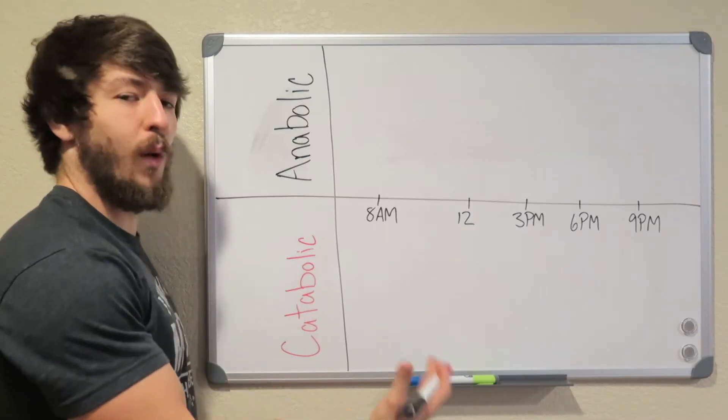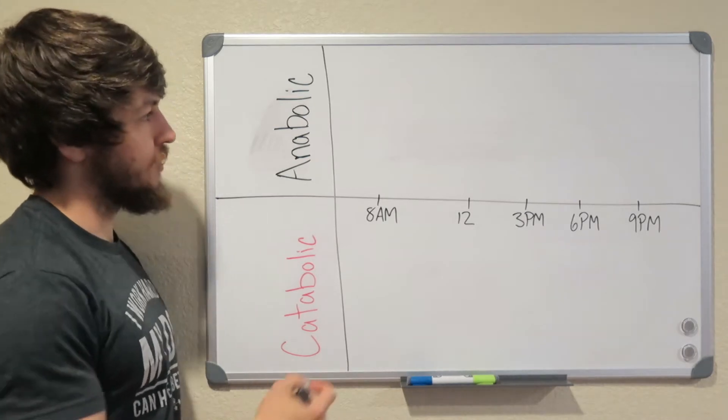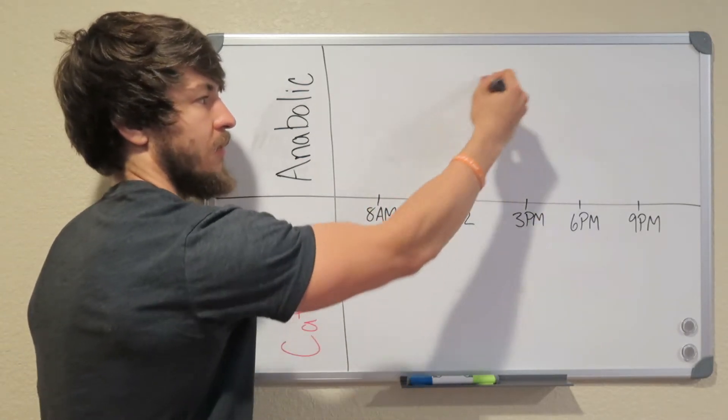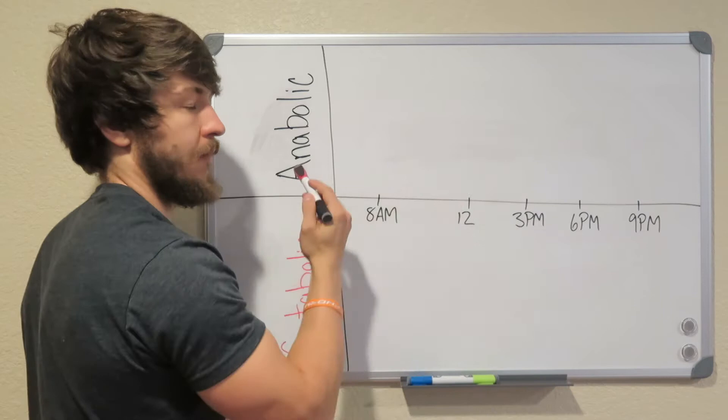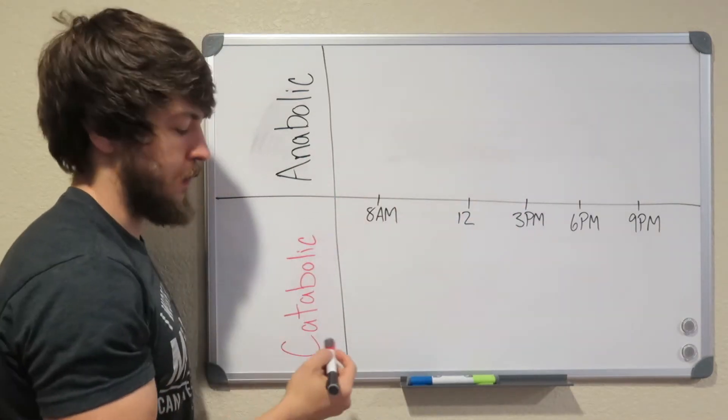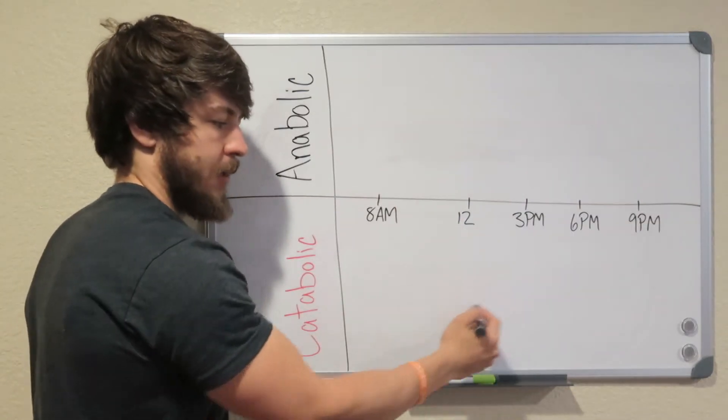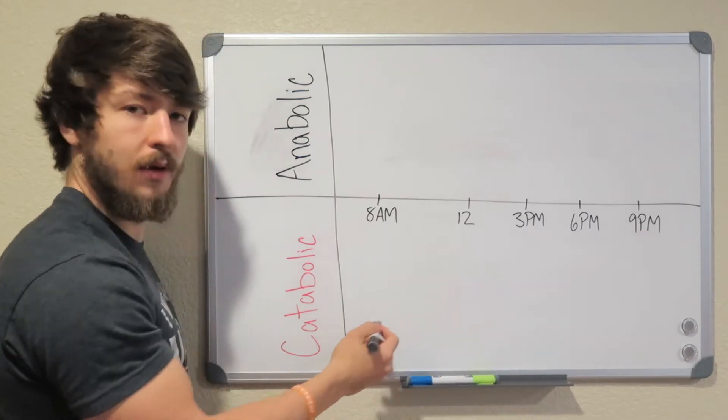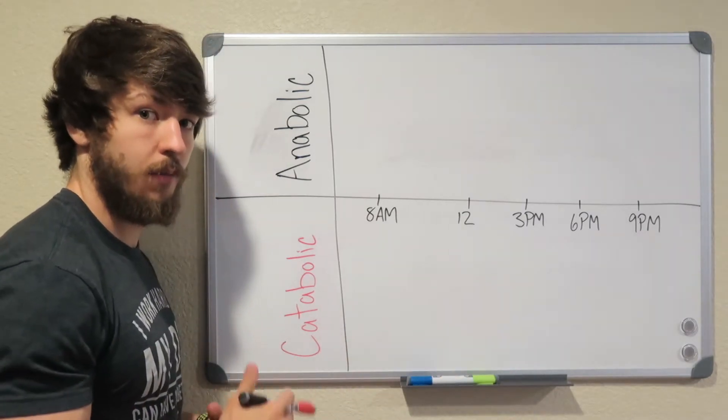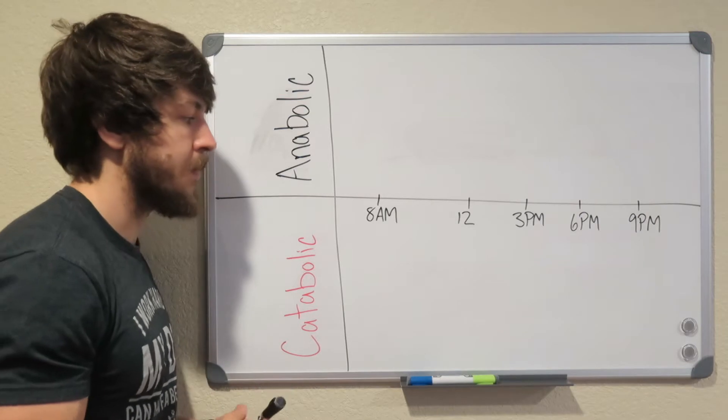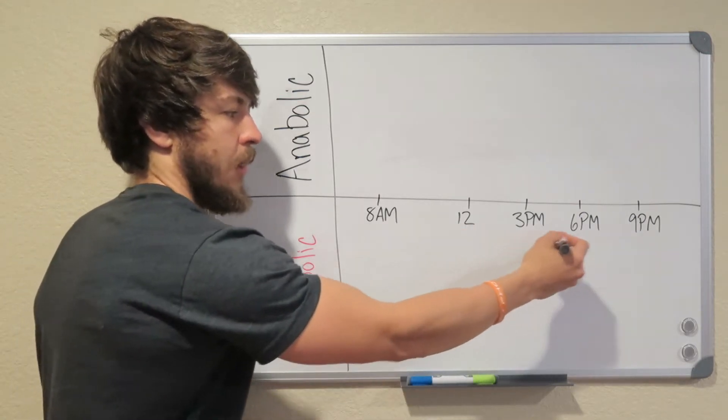So I drew you guys this wonderful chart. As you can see, we want to be up here in this top half, because this is our anabolic phase. That means we're going to be using fat as fuel. If our line ever comes down here, that means we're catabolic. And that's no good, because that means we're storing fat. And then we have the times to represent us throughout our day.